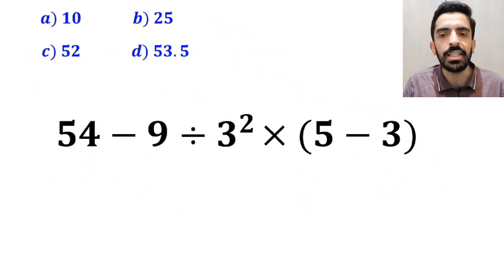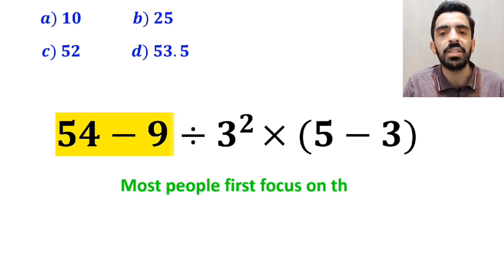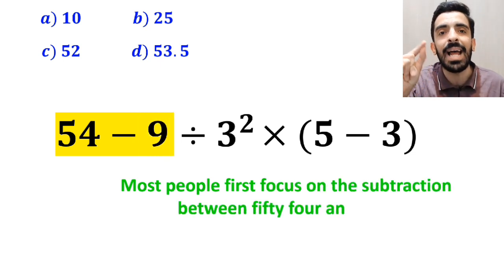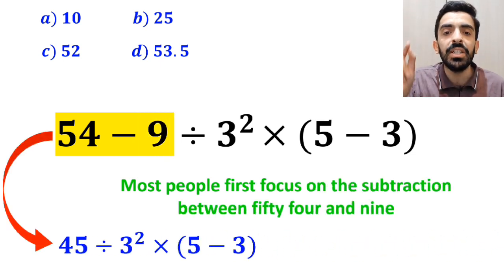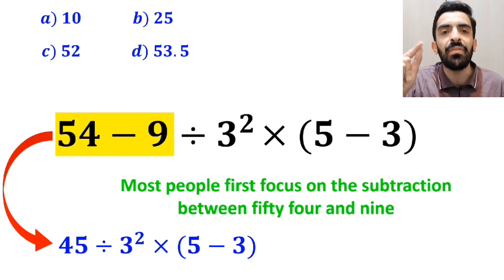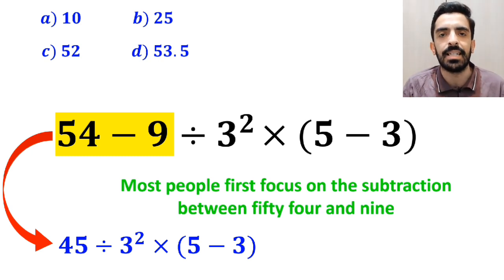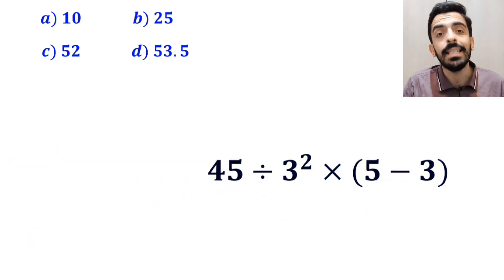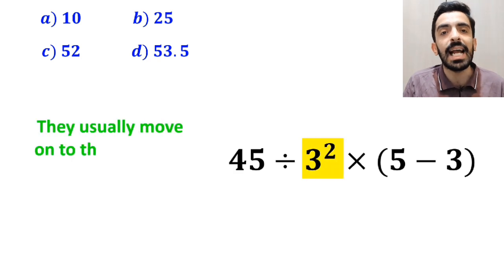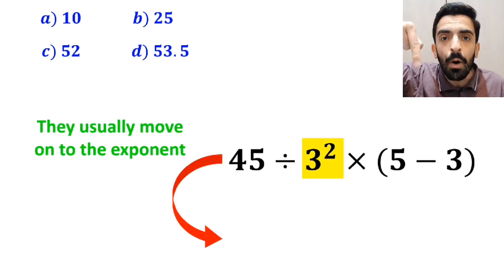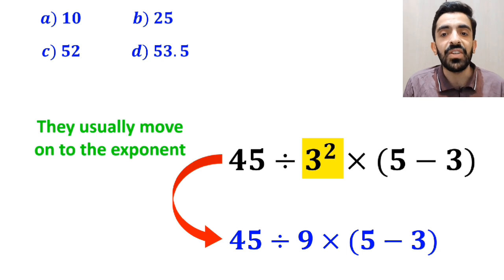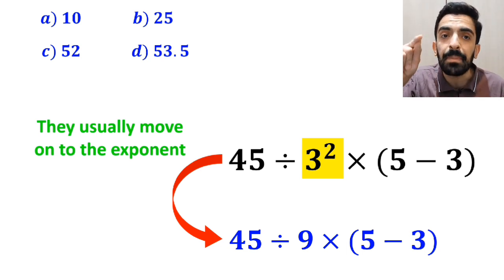To solve this question, most people first focus on the subtraction between 54 and 9, and they write this expression as 45 divided by 3 squared, then multiply by 5 minus 3 inside the parenthesis. And the next step, they usually move on to the exponent, and write this expression in the simplified form: 45 divided by 9 multiplied by 5 minus 3 inside the parenthesis.